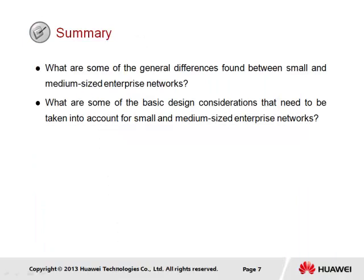In summary, what are some of the general differences between small and medium-sized enterprise networks? The first consideration is cost. Within medium-sized enterprise networks, it is expected that the budget supporting the enterprise network will be much greater in order to support both design, equipment purchasing, as well as maintenance. Another factor is the ability to support the business needs, which refers to both resources and certain services that will be required.